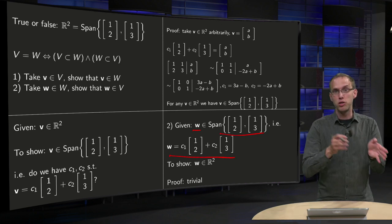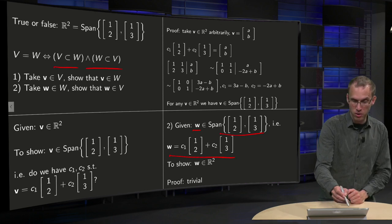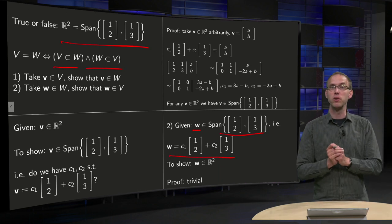We know that R² is a subset of the span, so together we know that both are satisfied, so R² is in fact the span of [1,2] and [1,3].